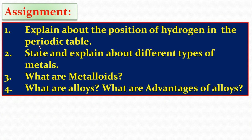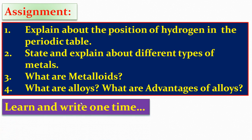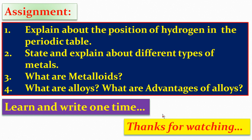Now students, come to the assignment. First, explain about the position of hydrogen in the periodic table. Second, state and explain the different types of metals. Third, what are metalloids? Fourth, what are alloys and what are the advantages of alloys? These four questions you have to learn and write one time. Thank you, students.